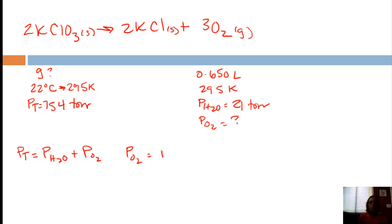So if we rearrange this to solve for the partial pressure of O2, since that's the one that we are trying to find, we know the total pressure is 754 torr. We know partial pressure or vapor pressure of water was 21 torr. And so if we subtract, that gives us 733 torr. Okay, so that takes care of our partial pressure.